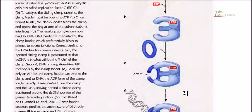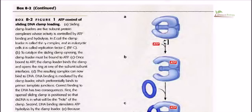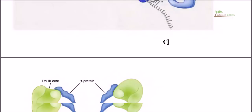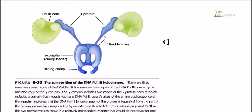One more important thing about the clamp loader protein: in E. coli and eukaryotic cells, the clamp loader protein does not exist on its own. It is actually bound within a complex — a type of enzyme complex called DNA Polymerase III in the case of E. coli. DNA Polymerase III is not a single protein; it is a collection of different proteins including the clamp loader protein, the beta clamp, and other proteins that come together to form the structure we call DNA Polymerase III.